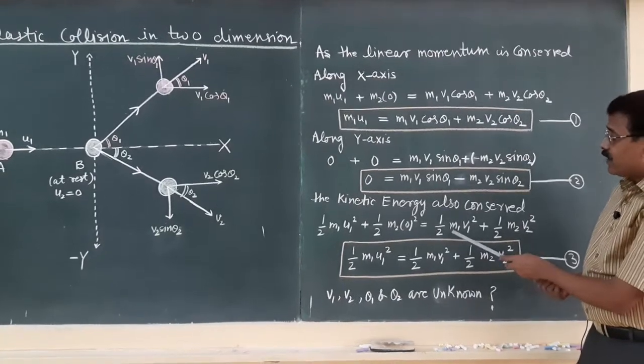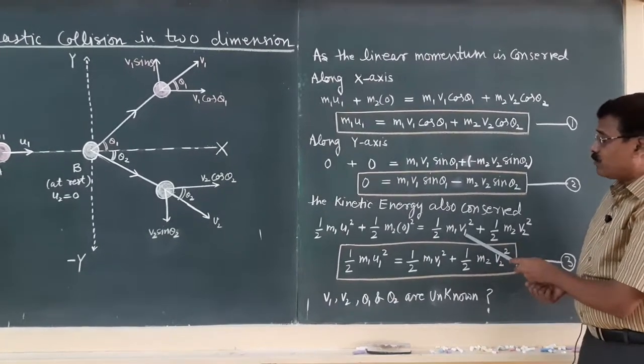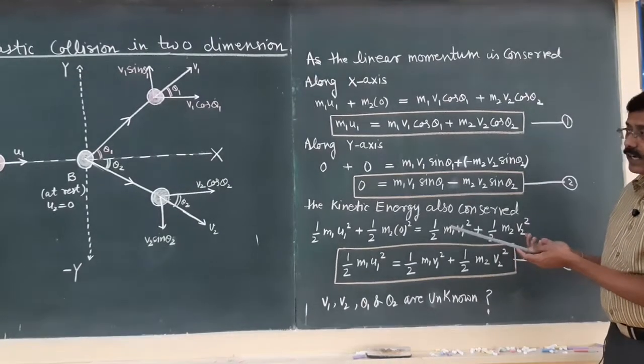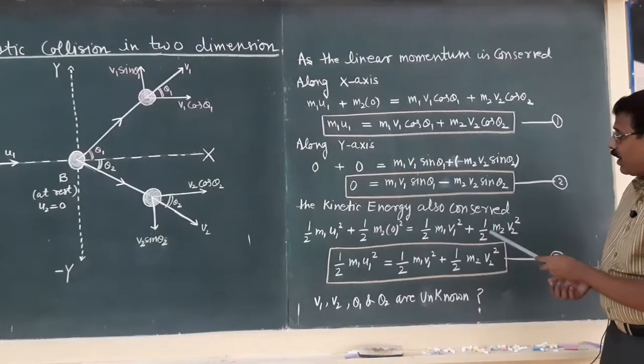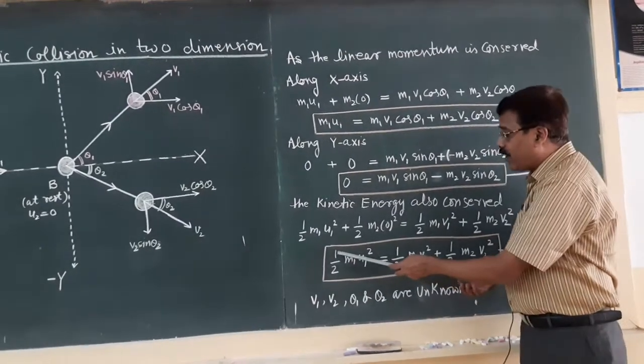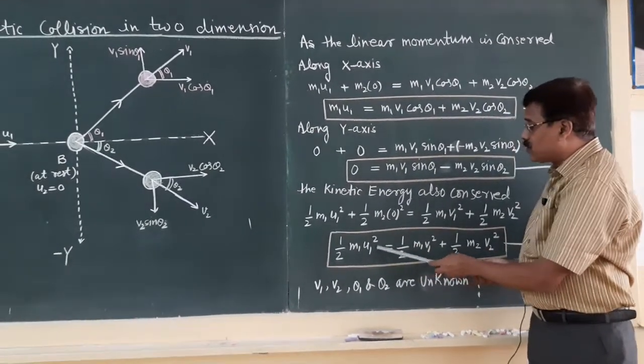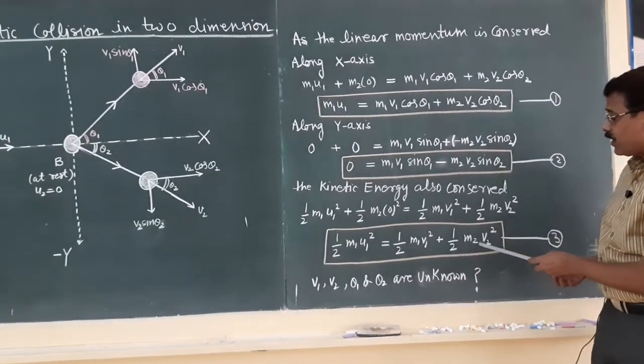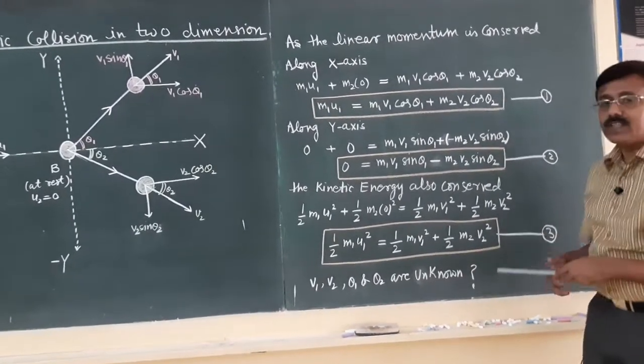After collision the kinetic energy of first object will be half m1 v1 square and kinetic energy of second object will be half m2 v2 square. If you simplify you will find half m1 u1 square is equal to half m1 v1 square plus half m2 v2 square, say equation number 3.